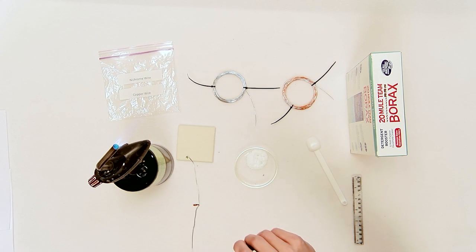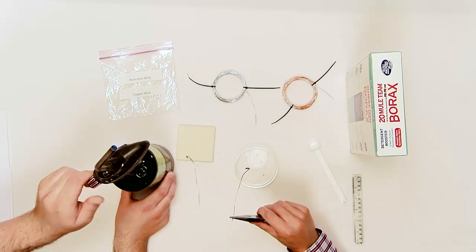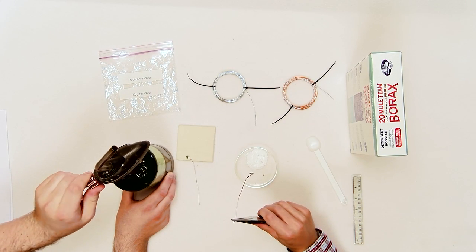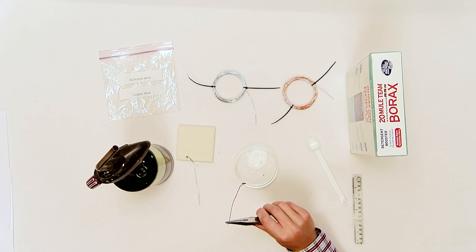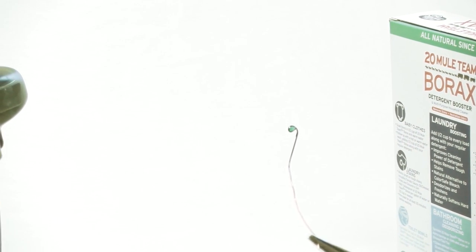Repeat the steps with the other nichrome wire. The bead produced should be a shade of green as well. Nickel turns gray when heated using the reducing flame. Chromium turns green and iron turns green as well. Depending on how much of each element is present in the wire, the shade of green will vary.